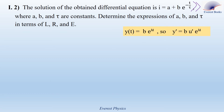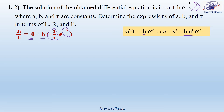Let me remind you of this formula: if Y equals B times e to the power U, where B is constant and U is a function of time, then the time derivative of Y equals B U' e to the power U. Therefore, dI/dt equals 0 plus B times minus 1 over tau times e to the power minus T over tau. Here, 0 is the derivative of constant A, minus 1 over tau is U', and minus T over tau is U. This simplifies to minus B over tau times e to the power minus T over tau.